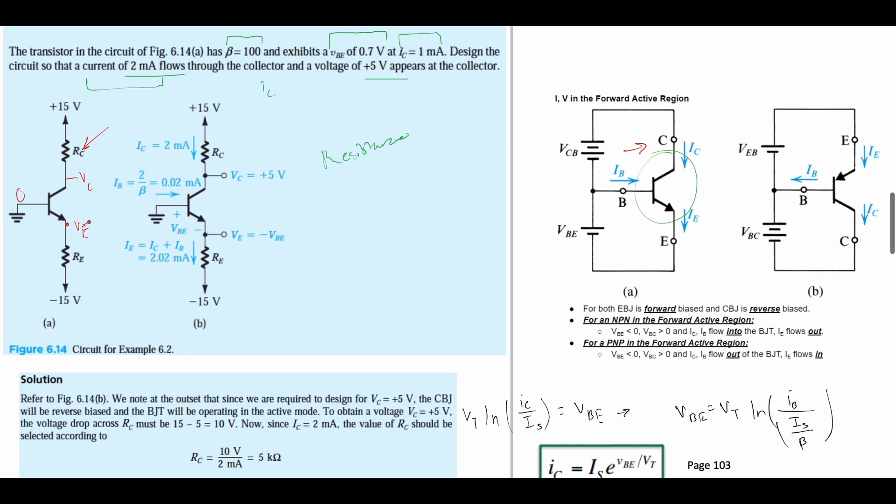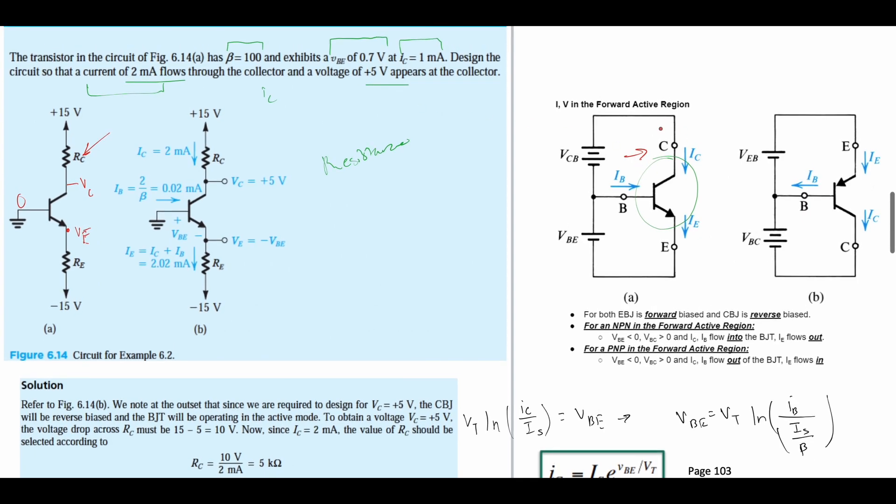Looking at the notes linked below the like button, we note at the outset that since we are required to design for VC equal to +5 volts, the voltage drop across RC is going to be 15 minus 5. So our VC is equal to 5 volts because 5 volts appears across the collector.